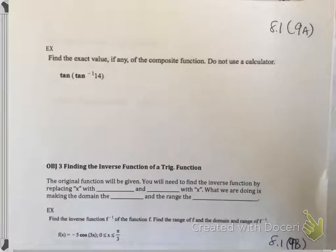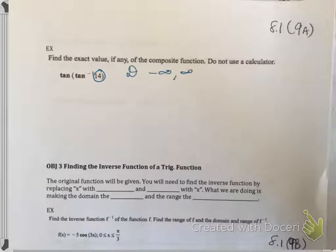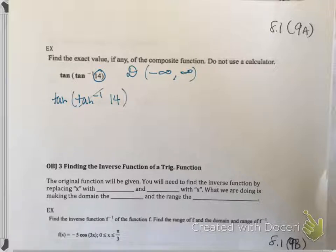Find the exact value of the composite function — don't use a calculator. The embedded function is inverse tangent with a value of 14. 14 is in the domain, which is negative infinity to positive infinity, so I can just cancel inverse tangent with tangent and I'm left with 14. Done.